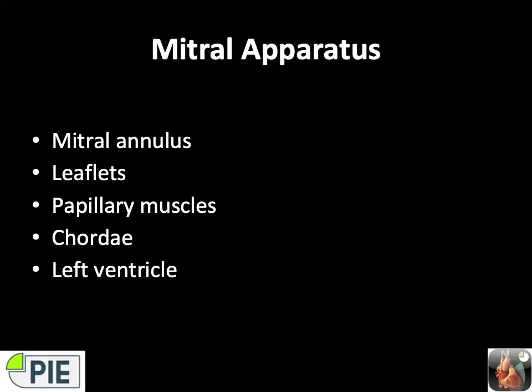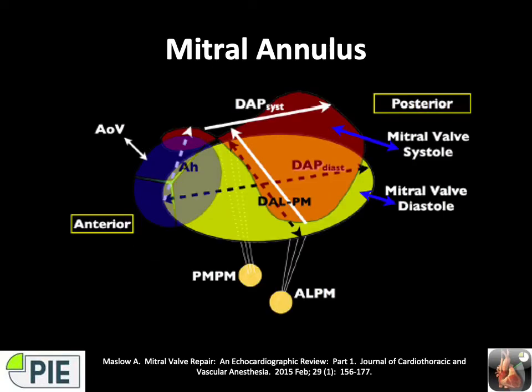Moving on to the mitral apparatus. The mitral valve is a complex apparatus that requires each individual component to function normally for optimal valvular function. It includes the annulus, the leaflets, the papillary muscles, the chordae, and the left ventricle itself. The annulus is a dynamic fibromuscular ring — oval and saddle shaped, although it flattens in disease. The anterior annulus makes up one-third of the annular circumference, forms part of the cardiac trigone or skeleton, is relatively immobile and well supported. It forms part of the LVOT.